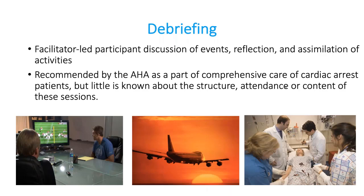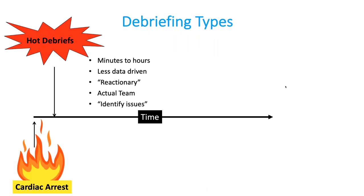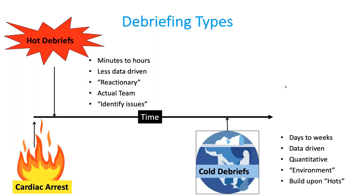There are a few debriefing types to discuss. Hot debriefs happen minutes to hours after an event — they tend to be less data-driven, a little more reactionary. They involve the actual team members that were at the code and are used to identify issues that came up, including quality improvement or patient safety issues to be fixed for the next event. These are really important, but a little bit different than what we're going to be talking about today.